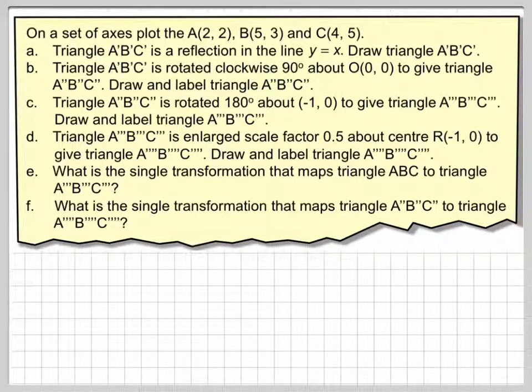This is the second video about combinations of transformations. On a set of axes, plot the point A(2, 2), B(5, 3), and C(4, 5).